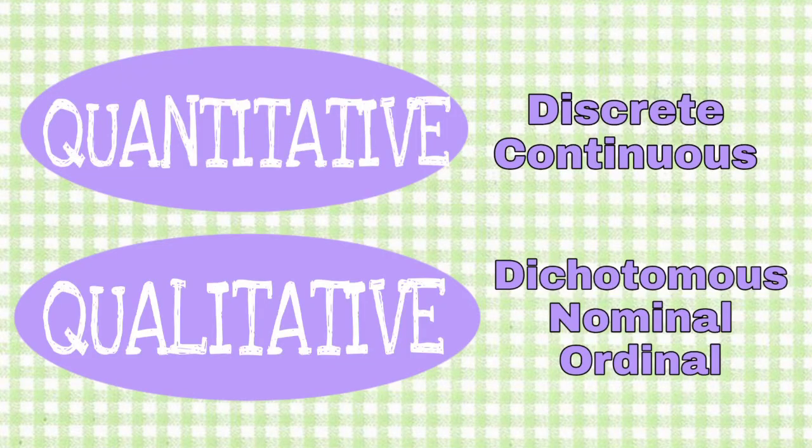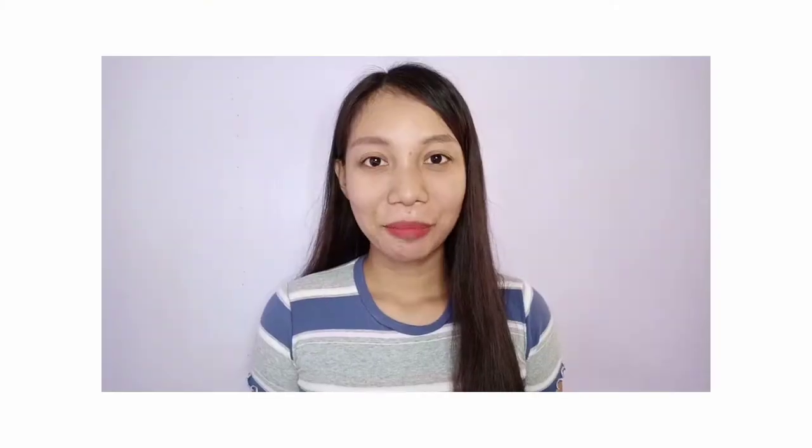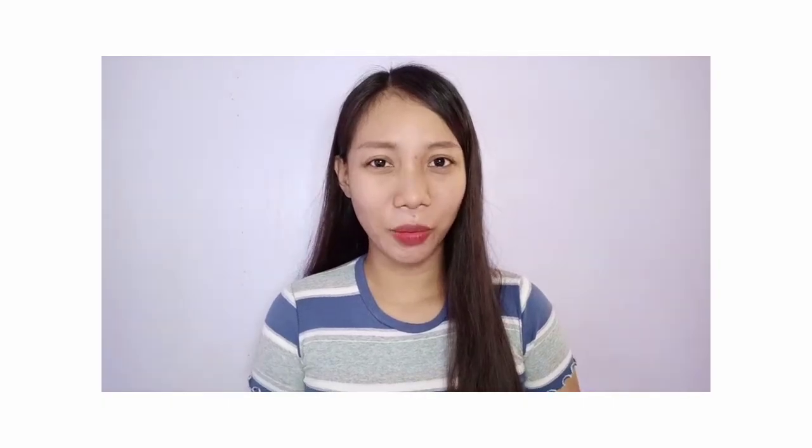The variables can be classified according to their nature. The first classification is quantitative, otherwise known as numerical, and the other one is qualitative or categorical. Under quantitative, we have discrete and continuous variables. Under qualitative, we have nominal, ordinal, and dichotomous variables. You may wonder why we are tackling qualitative variables in practical research too, which is quantitative research. As we go on with the discussion, you will find out more about qualitative variables and why they are included in a quantitative study.